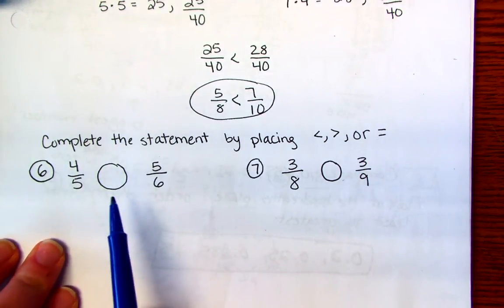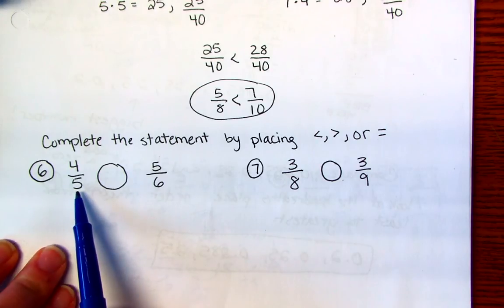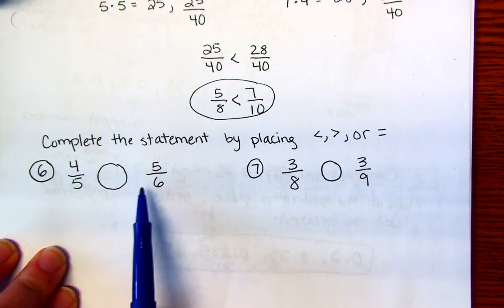So to compare fractions, I need to have what we call a common denominator. So I don't have one here, I have a 5 and a 6.